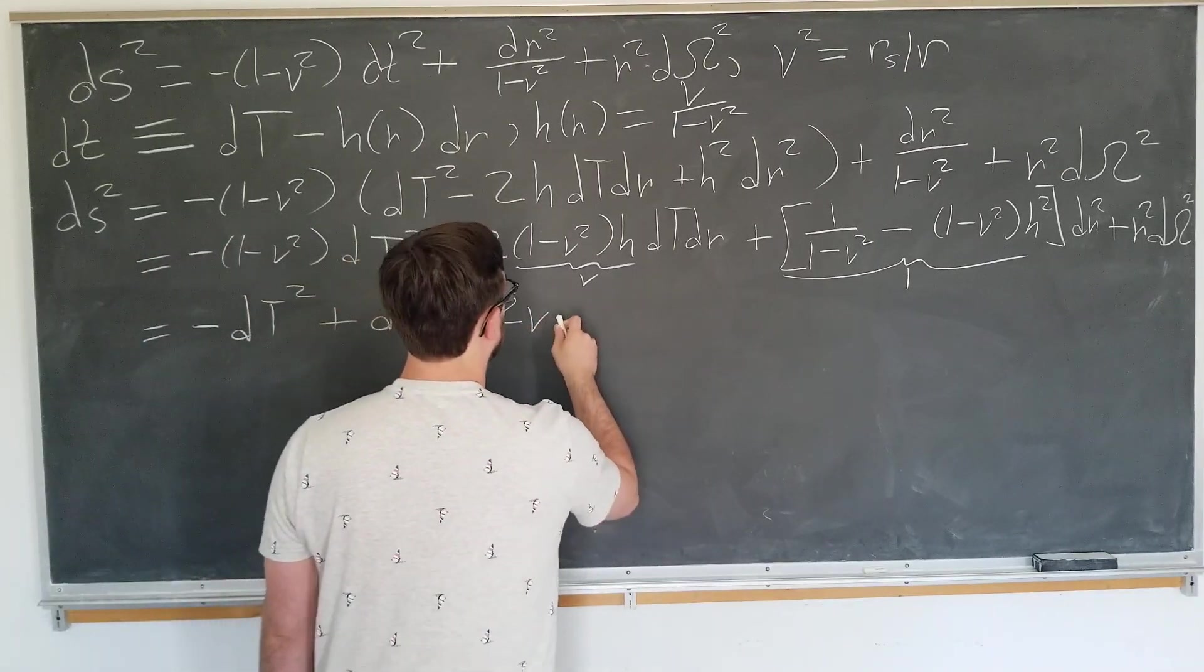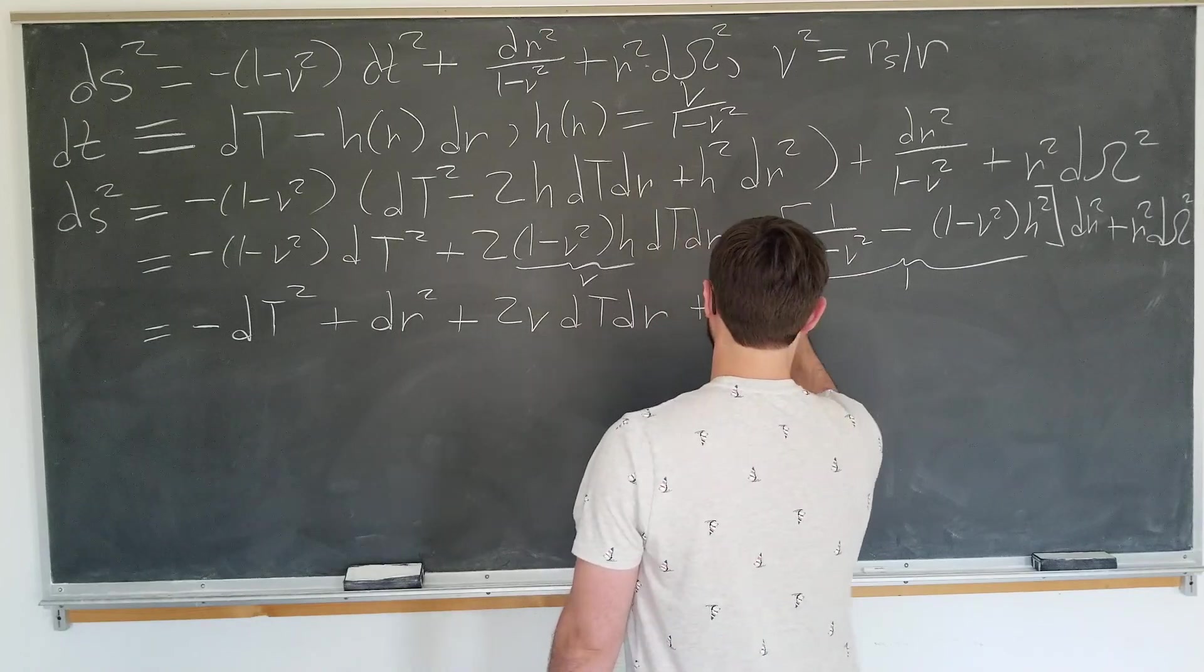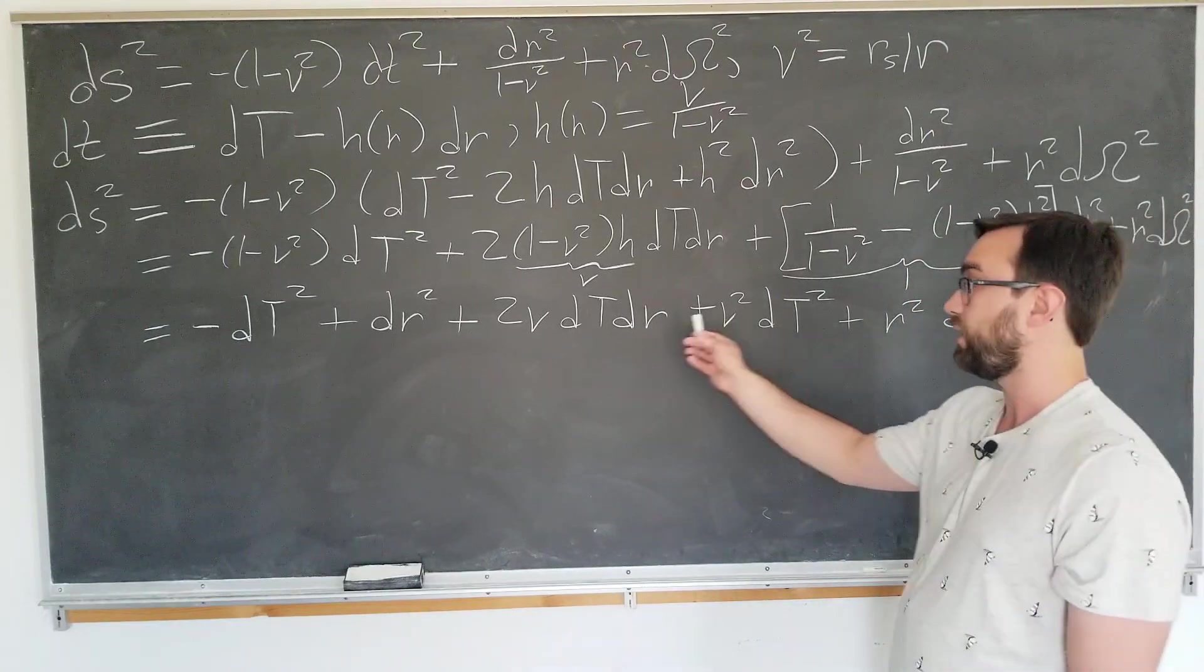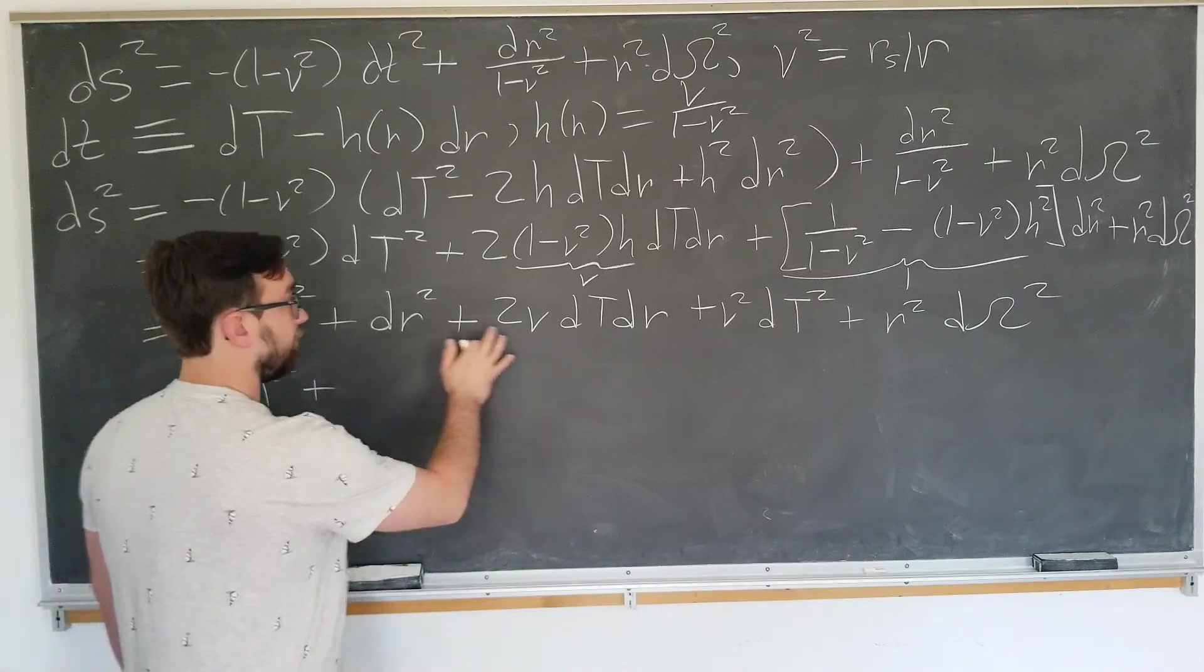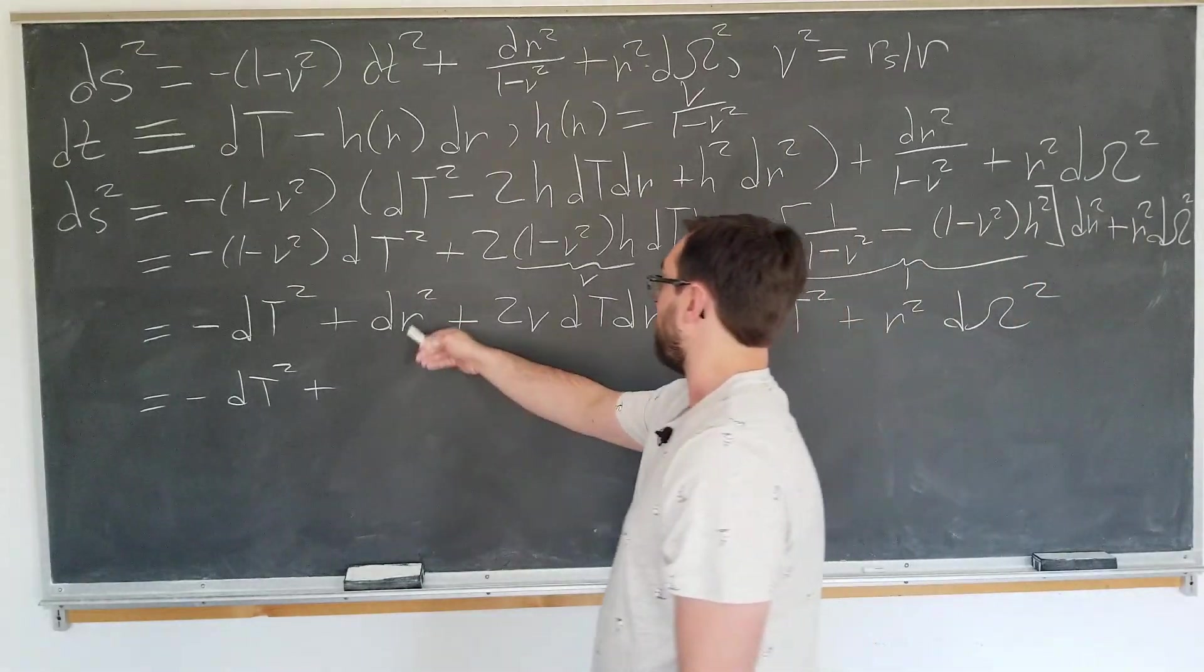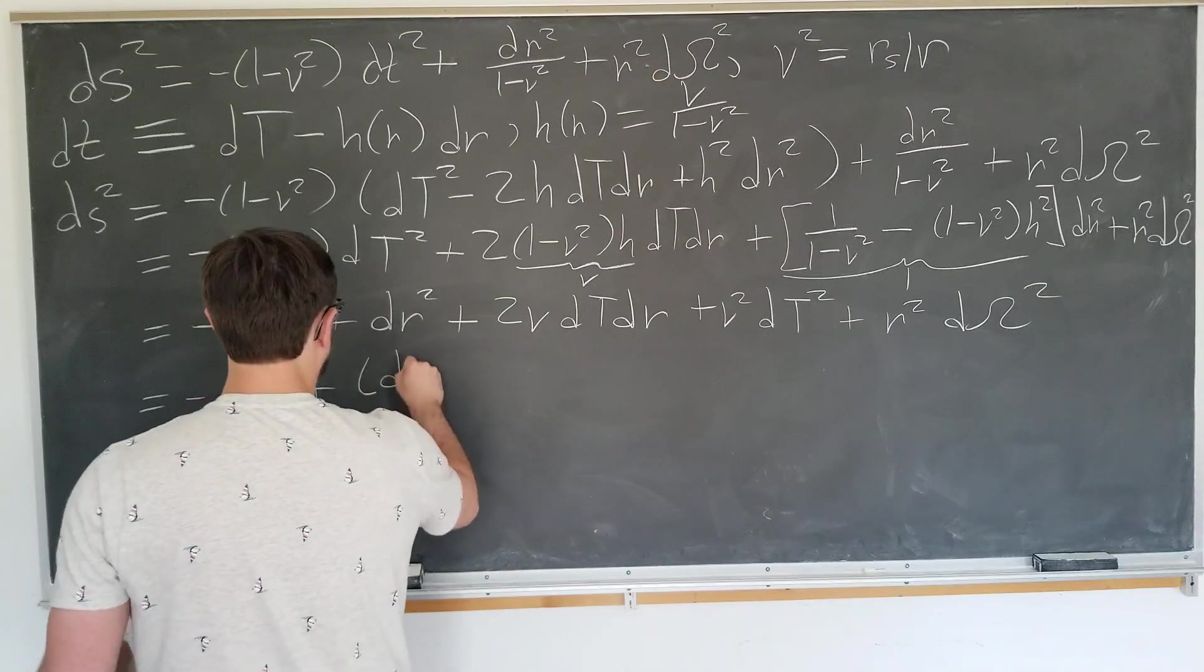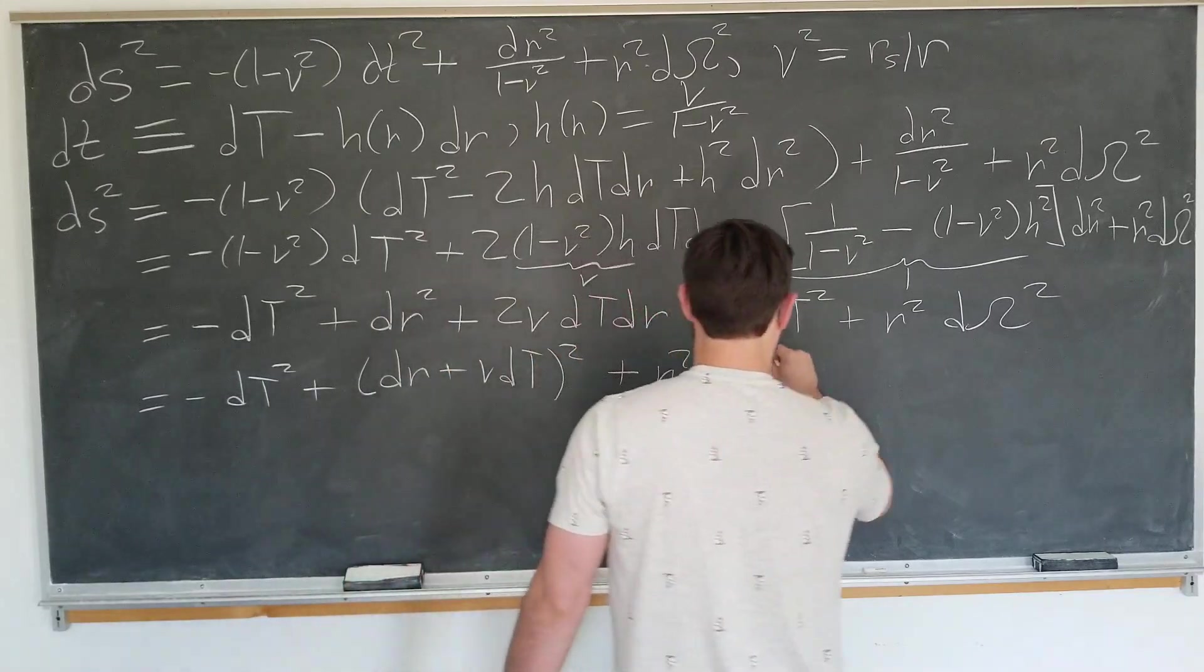Plus 2v dt dr. And now we have a plus v squared dt squared plus the r squared d omega squared term coming along for the ride as well. Now you see why I separated them. We're going to keep the first term here minus dt squared. And we note that this can actually be written as something squared. We have squares, two times the product of singular terms, then something else squared. So we know that this can actually be written as the square of the following quantity: dr plus v dt squared plus r squared d omega squared.